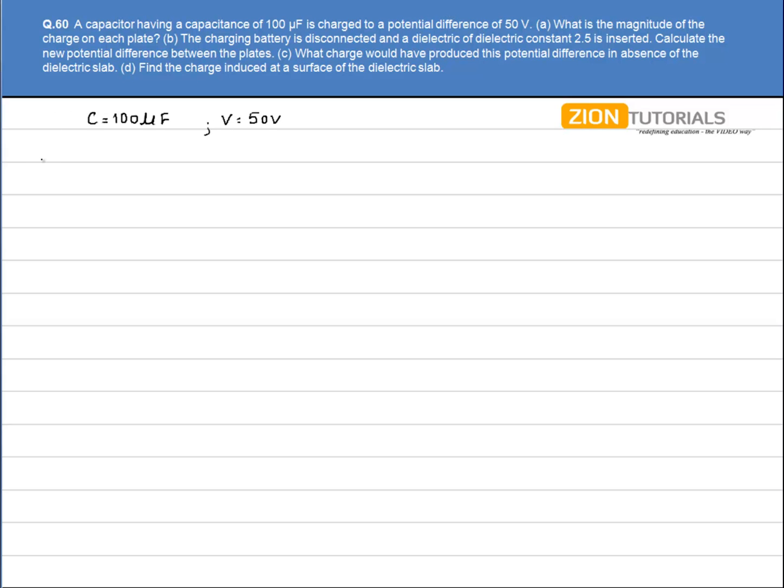We have to calculate the magnitude of the charge on each plate, which can be easily calculated by the formula Q equals CV. That is 100μF into 50, which comes out to be 5mC.